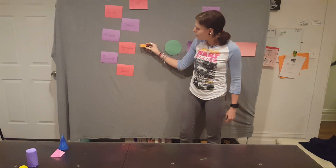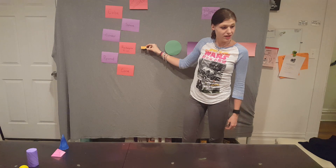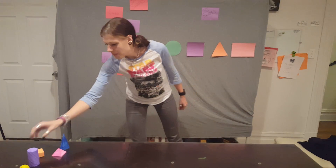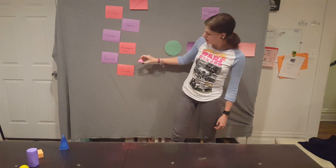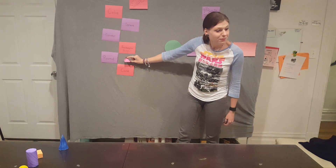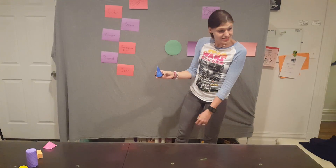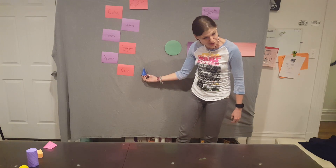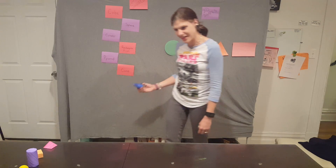This shape is what we call a rectangular prism — say it with me: rectangular prism. Good job! This shape is what we call a pyramid — say it with me: pyramid. Good job! And lastly, this shape is what we call a cone — say it with me: cone. Good job, guys!